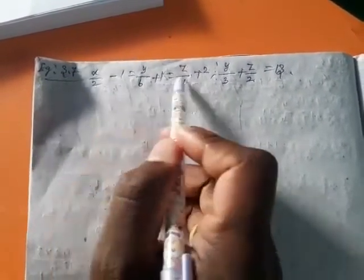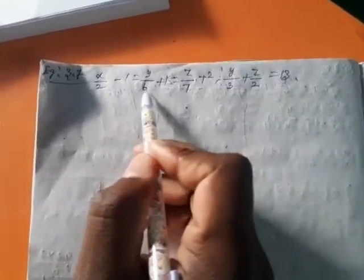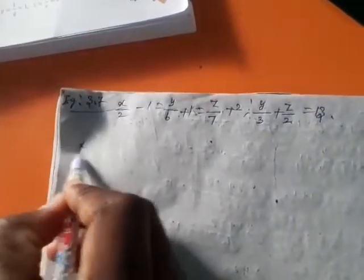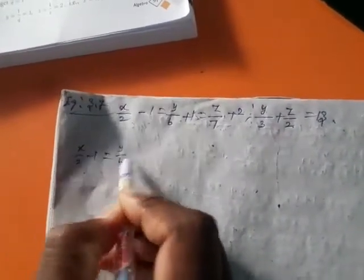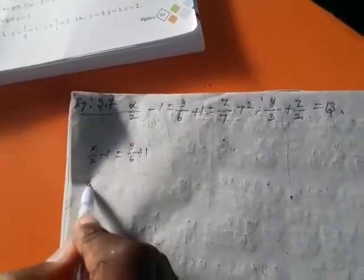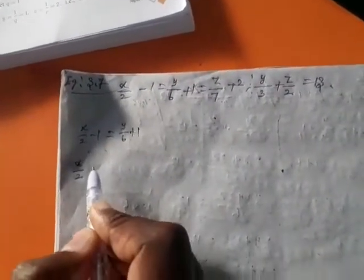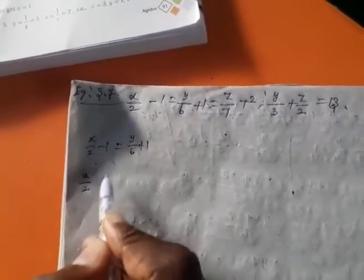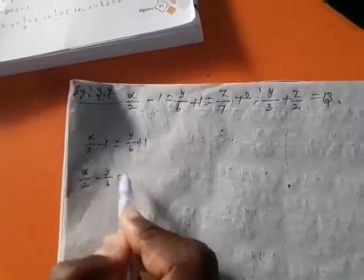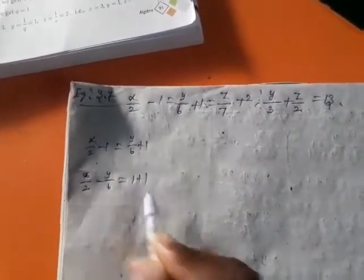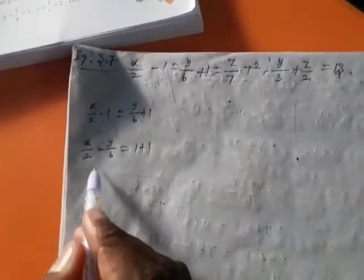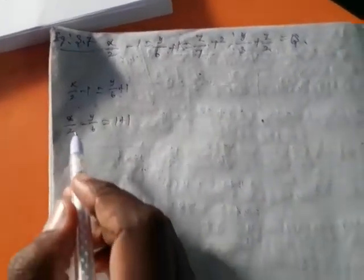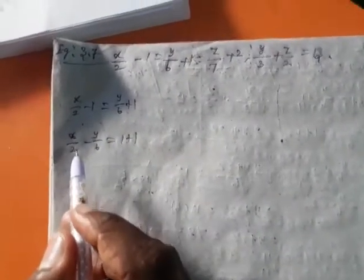Now, taking the first two terms: x by 2 minus 1 equal to y by 6 plus 1. Variable one side, constant one side — take it. So, x by 2 minus y by 6 equal to minus 1 goes right-hand side plus 1, which gives plus 1 plus 1. Now take it. Either LCM or cross product.